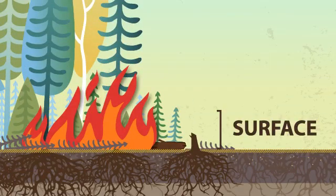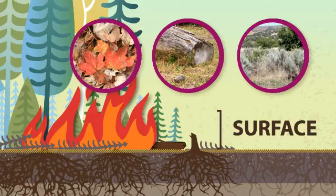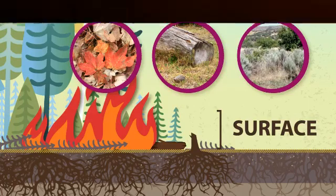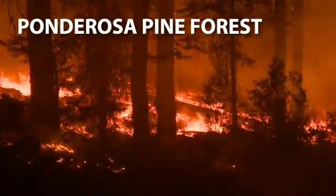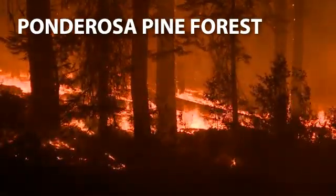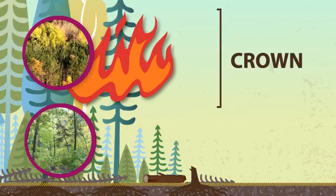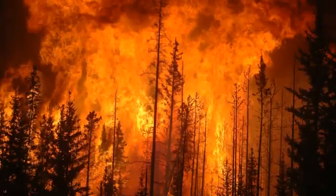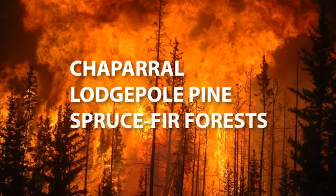Surface fires spread by flaming combustion through fuels at or near the surface including needles or leaves, grass, woody debris, small plants, and shrubs. Surface fires have a higher rate of spread than ground fires. The ponderosa pine forest type supports surface fires under normal conditions. Crown fires burn through shrub and tree crowns and canopies. They are fast spreading and release an enormous amount of heat and energy over a short period of time. Ecosystems that support crown fires include chaparral, lodgepole pine, and spruce fir forests.